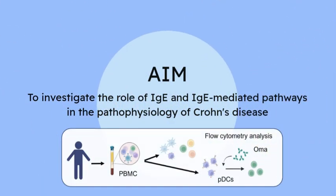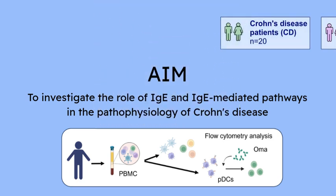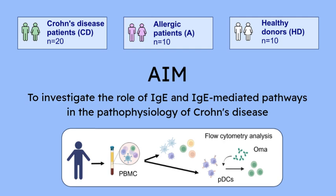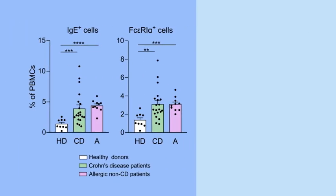Therefore, the aim of this study was to investigate the role of IgE and IgE-mediated pathways in Crohn's disease. For that, we obtained peripheral blood from 20 patients with Crohn's disease, 10 allergic patients, and 10 healthy donors, from which we purified the peripheral blood mononuclear cells, or PBMCs.